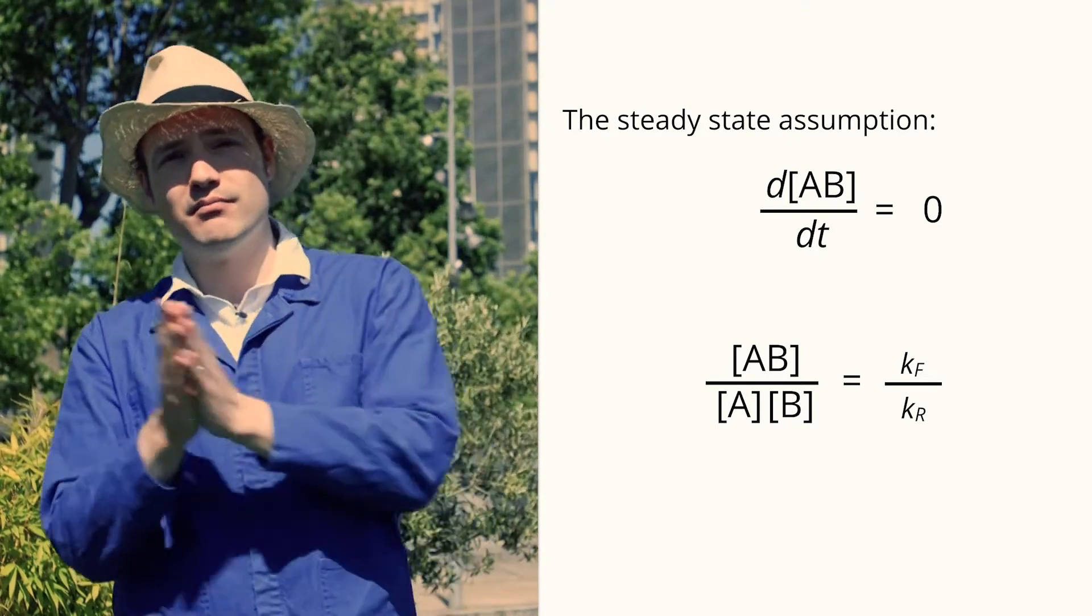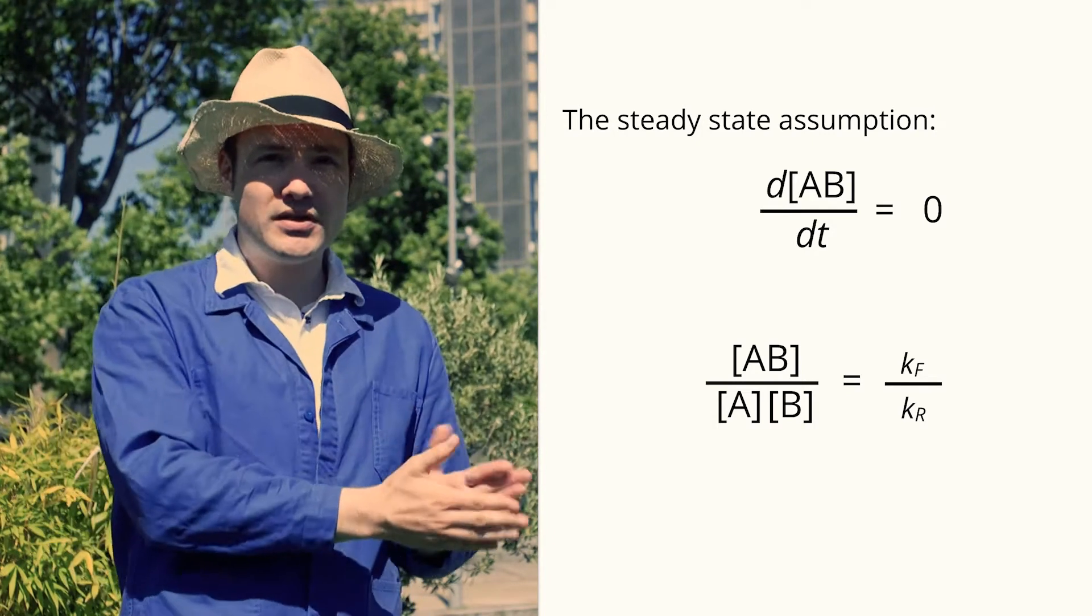When it's large, we expect to see mostly the complex. When it's small, mostly the subunits.